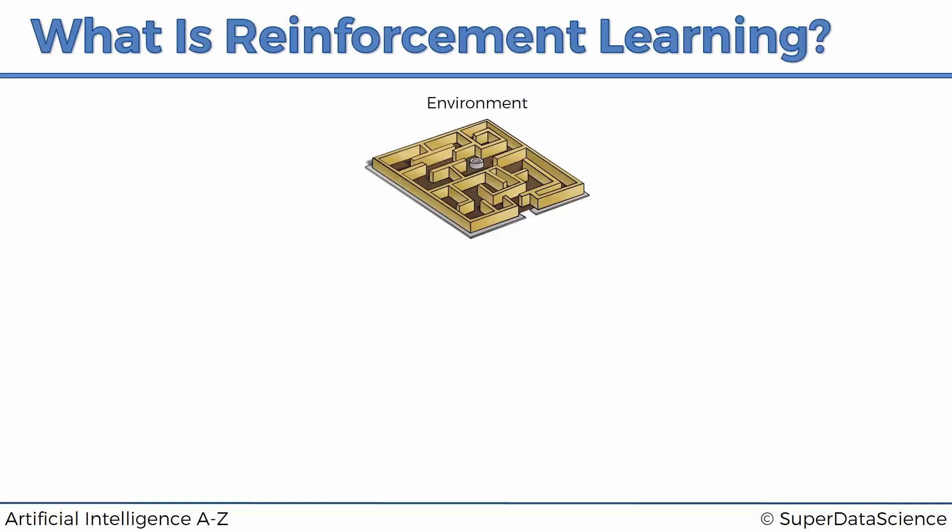Here we've got a little maze, and this maze is our representation of an environment. That's what we're going to be dealing with in this course — certain environments in which our artificial intelligence is going to be performing, taking actions, looking to beat these environments, and looking to win in these environments.